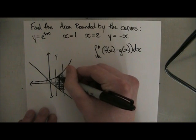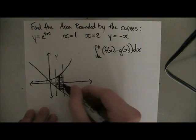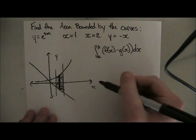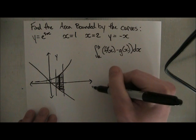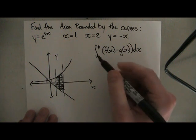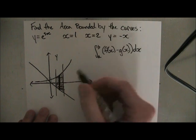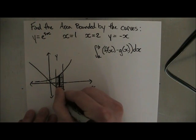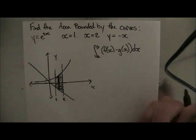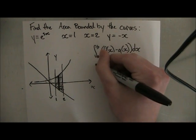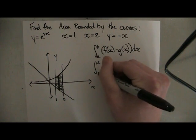Alright, so because we're using the vertical rectangles, we know we want to use x, right, because it cuts through the x. So we need values of a and b in relation to x. Well, that's really easy, because it tells us in the problem that x is equal to 1 and x is equal to 2. So that's 1 here, and 2, and that's exactly the bounds that we want for our integral. So a is 1, b is 2.